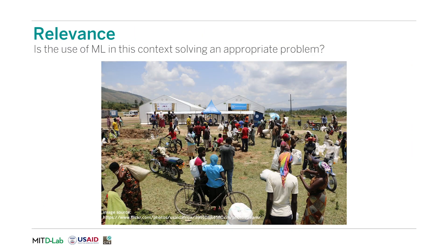The first criterion is relevance. Is the use of machine learning in this context solving an appropriate problem? As machine learning becomes more of a trend, we are seeing more and more organizations seeking to apply it to their work in an effort to distinguish themselves from their competitors or to increase their appeal to funders. Many of these organizations may try to implement prepackaged or off-the-shelf machine learning solutions without understanding if it's the right tool for the problem they are trying to solve.